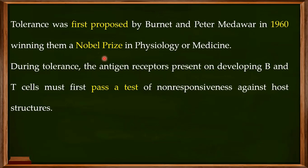During tolerance, the antigen receptors present on developing B and T cells must first pass a test. If you go to my previous video, you can understand what is happening on these developing B and T cells and how they produce these random receptors. During the mechanism of tolerance, these antigen receptors on developing B and T cells must demonstrate non-responsiveness against host structures.